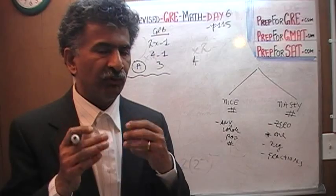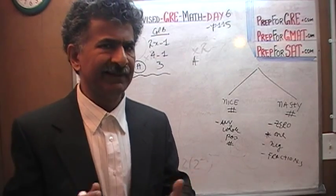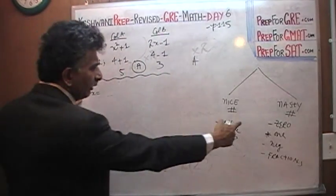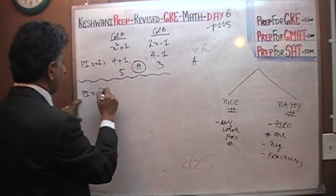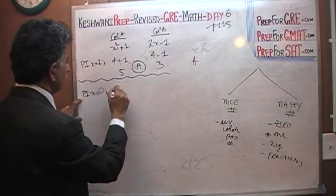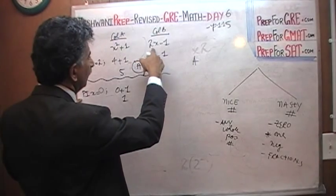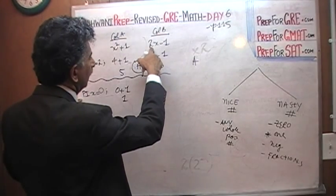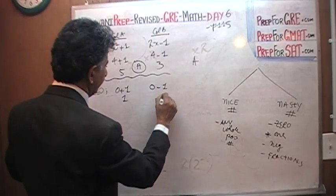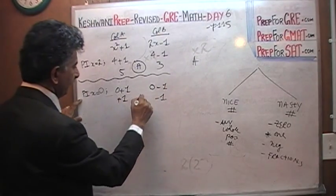But that's okay. As long as you try two or three different scenarios and the answer does not change, there is a very good chance that is the answer. So let's plug in x equal to zero. If x were zero, zero squared is zero, zero plus one is one. If x were zero, two times zero is zero, minus one is negative one. Positive one here, negative one there — the answer is A.